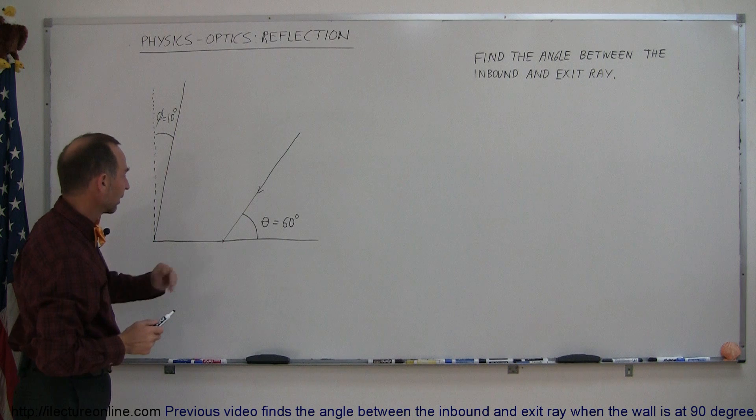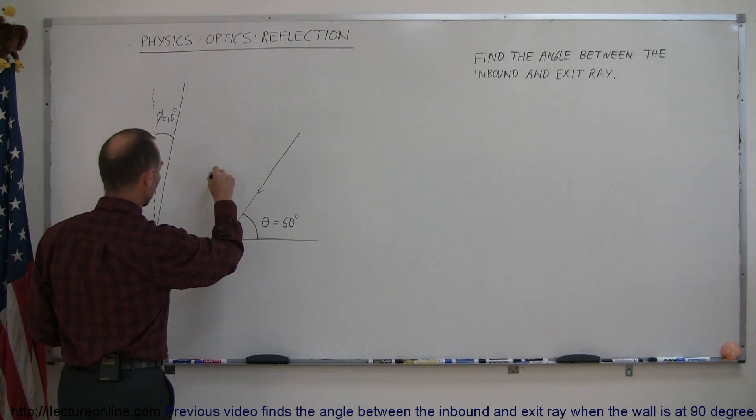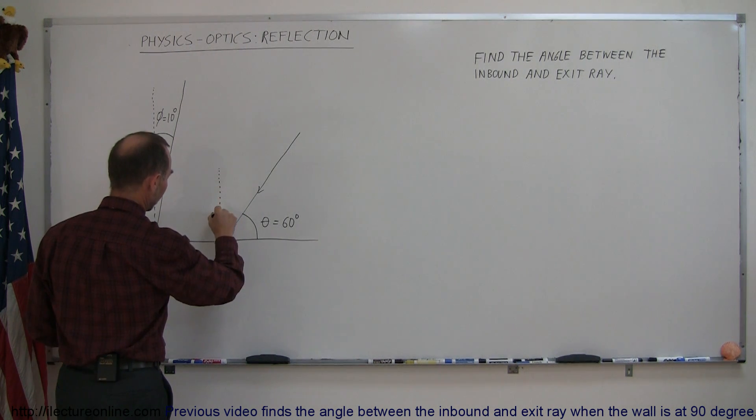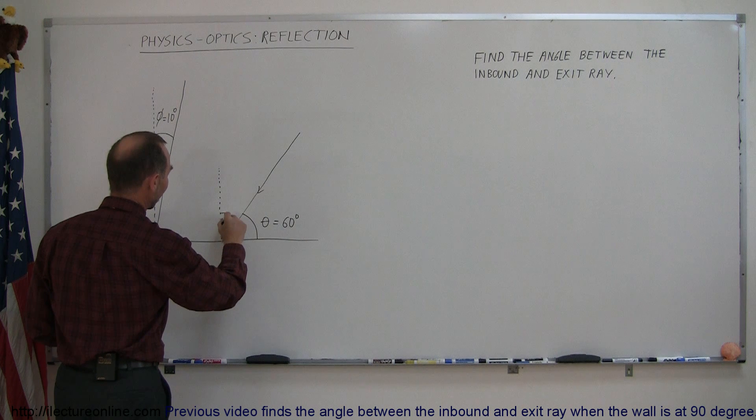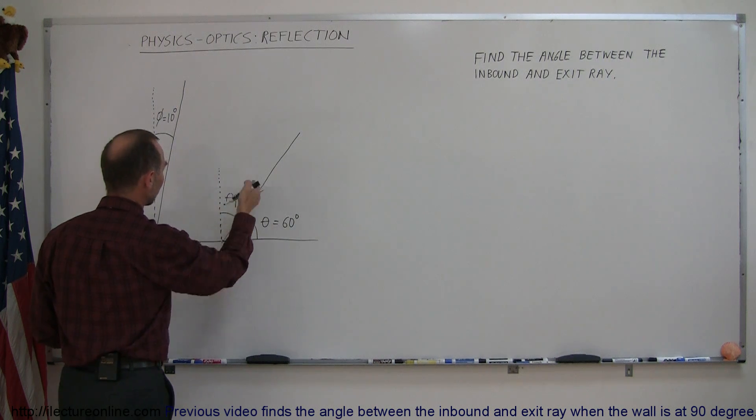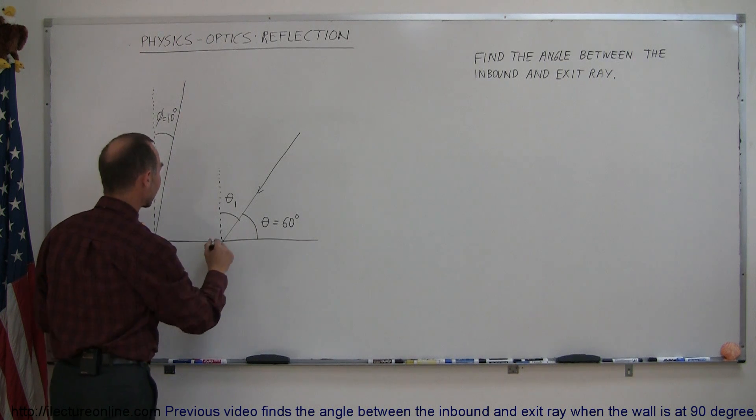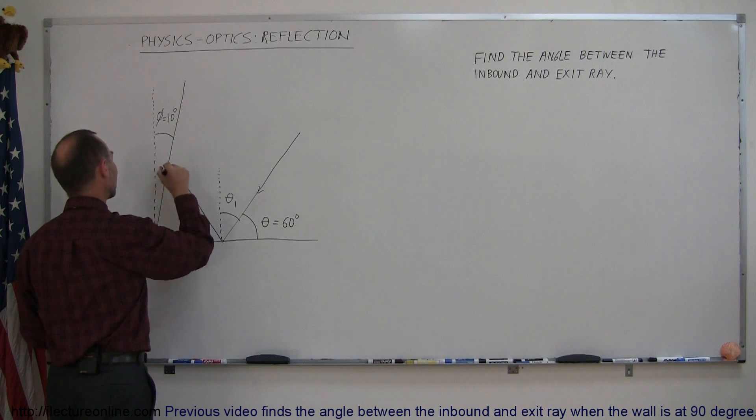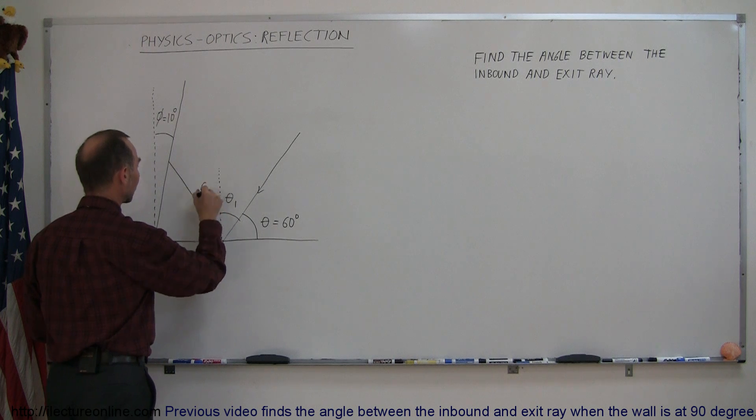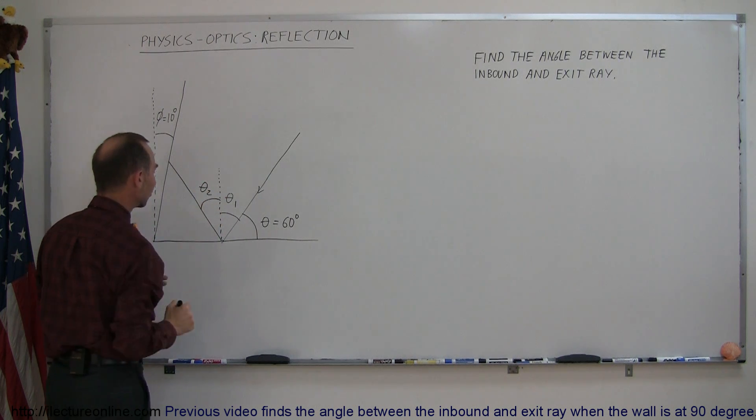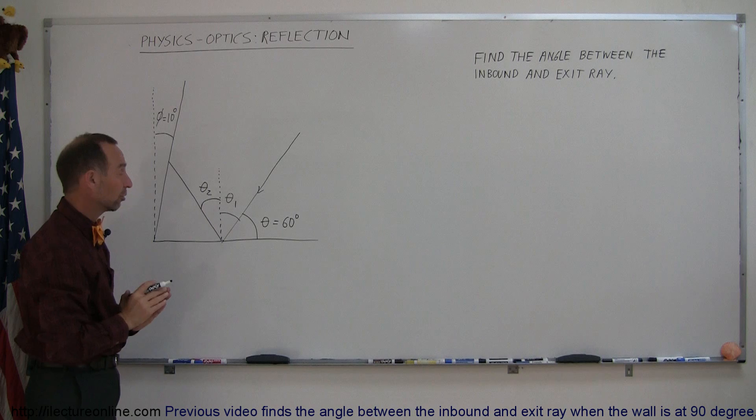So the first thing we do is look at the first reflection and we draw our normal to the surface. And then we can see that this angle right here, let's call that theta sub 1 which is the angle of incidence, will then equal the angle of reflection as the ray gets reflected in the opposite direction right there. And so this here becomes theta sub 2 which is the angle of reflection and those two have to be equal to each other.